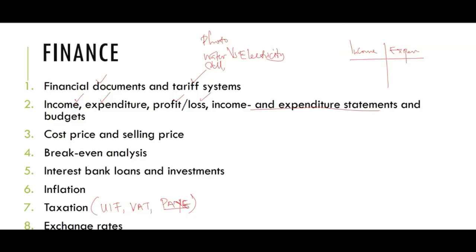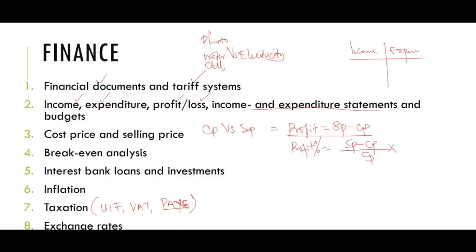Then cost price and selling price — CP versus SP. Profit will always equal selling price minus cost price. Profit as a percentage will always be selling price minus cost price, divided by cost price, times 100. We shall also use this for percentage change.